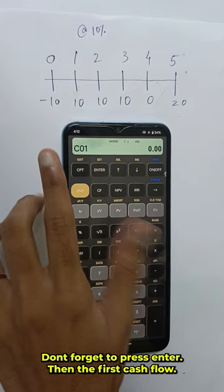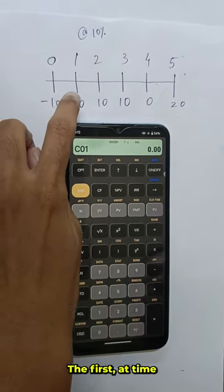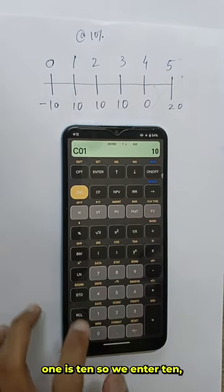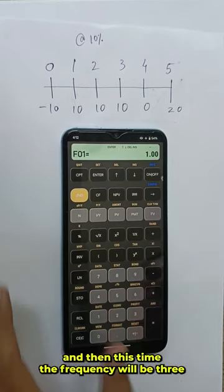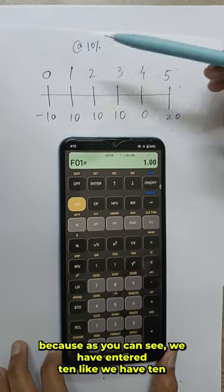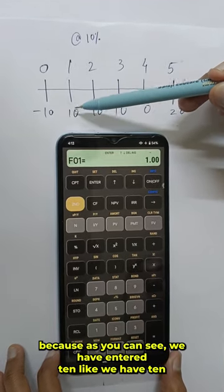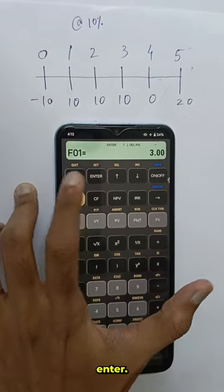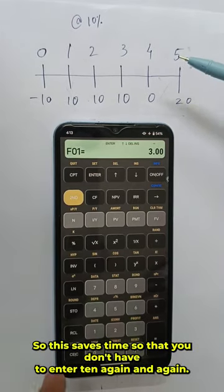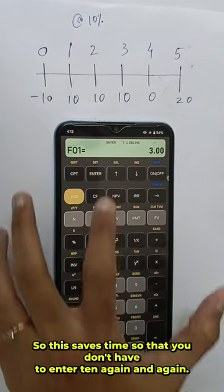Then the first cash flow at time 1 is 10. So we enter 10 and then this time the frequency will be 3 because as you can see we have 10 for 3 years. 3 enter. So this saves time so that you don't have to enter 10 again and again.